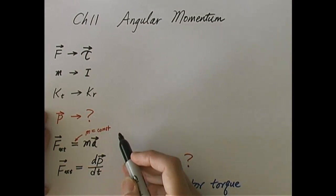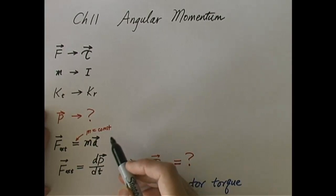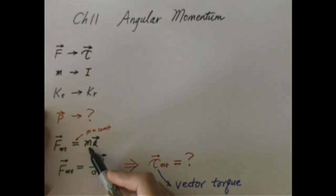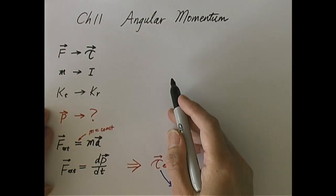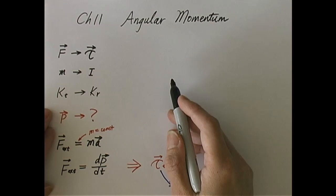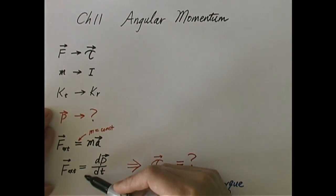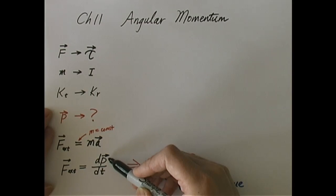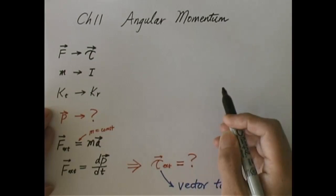What is the usage of linear momentum? We know that in the case when the mass of a system is constant, we find the external force to be equal to mass times acceleration of the center of mass. If the mass is not constant, then the most general case of Newton's second law is that the external force equals the rate of change of linear momentum, dp over dt. Of course, if mass is constant, it reduces to F equals ma.